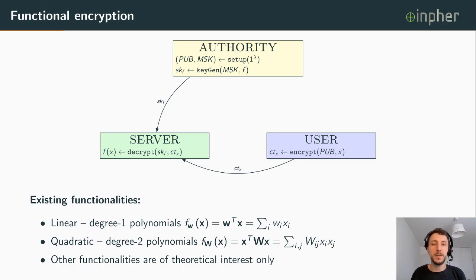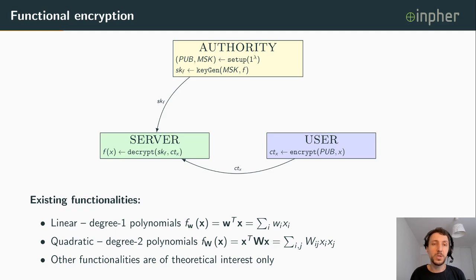In the literature, functional encryption schemes support different functionalities. Amongst them, the most practical ones are the linear and quadratic functional encryption schemes, which allow performing degree-1 or degree-2 polynomial evaluations. Other functionalities proposed in the literature are only of theoretical interest.